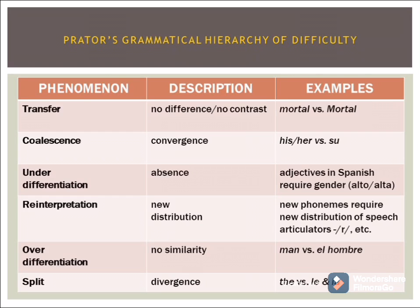Level 4 is over-differentiation: there is no similarity between the native language and the second language; it is a new item entirely. For example, English speakers must learn the use of determiners in Spanish — 'man' becomes 'el hombre' in Spanish. Level 5 is the split, where one item in the native language becomes two or more in the target language, diverging and requiring the learner to make a new distinction. For example, the French words 'le' and 'la' both refer to the article 'the' in English.